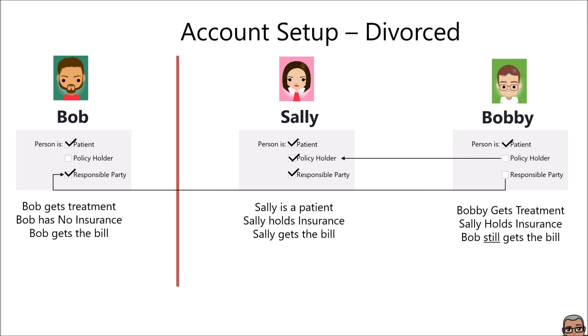Bobby's responsible party could be Sally or Bob — that's up to the courts, not us. This is a simple way of looking at how we connect the dots. We don't have to create a new version of anybody. All we have to do is turn on those links between responsible party and policyholder. Very simple, doesn't matter how it happens — this is how we make these things work. Hopefully that helps; any questions, let me know. Thanks.